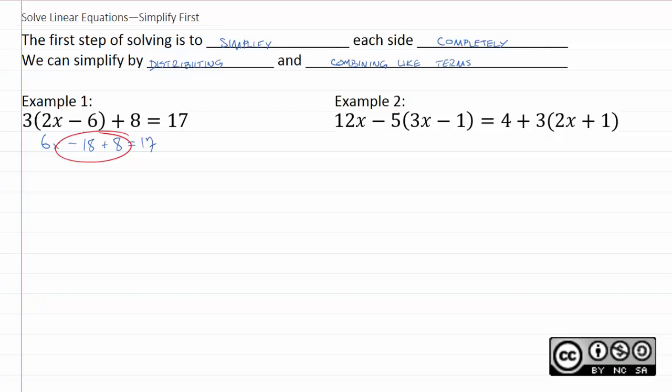But before that, we actually combine these. We just handle them by adding or subtracting them. In this case, we have negative 18 plus 8, which comes out to negative 10. So we'll have 6x minus 10 equals 17.